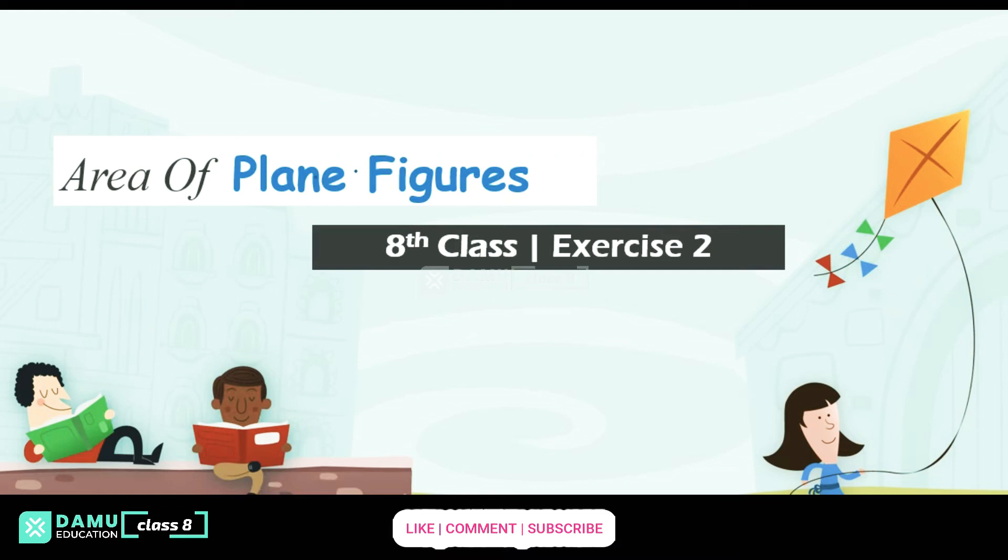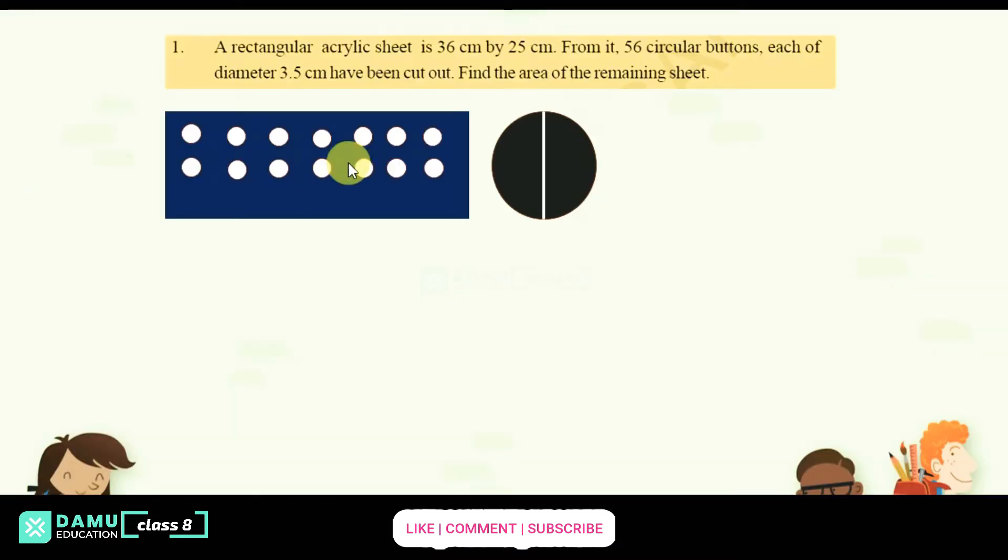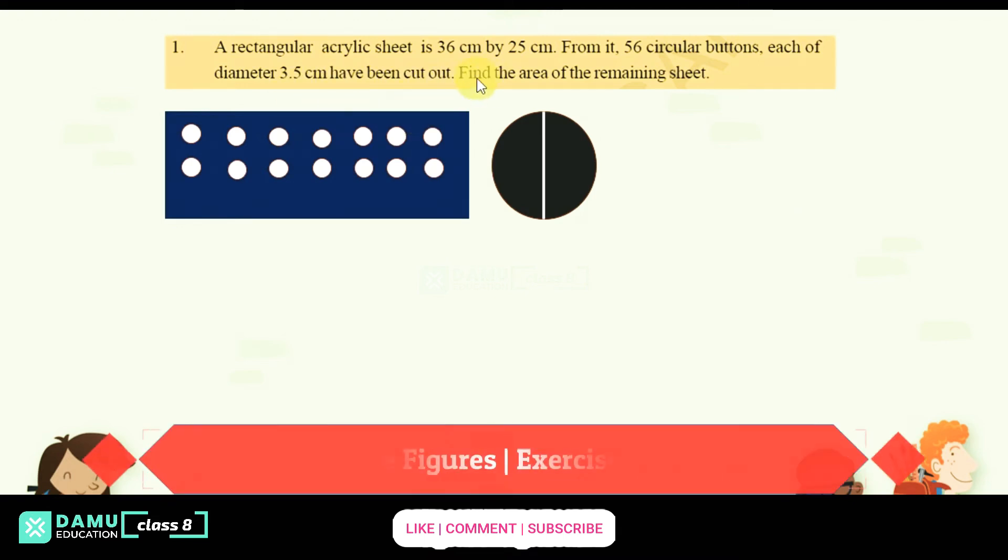So our first question is: A rectangular acrylic sheet is 36 cm by 25 cm. Then 56 circular buttons, each of diameter 3.5 cm have been cut out. Find the area of the remaining sheet.